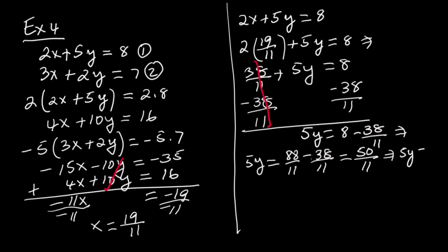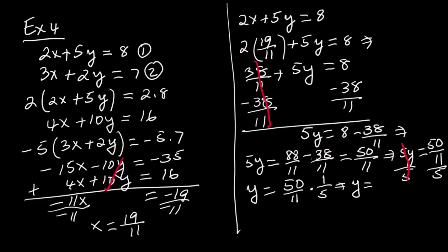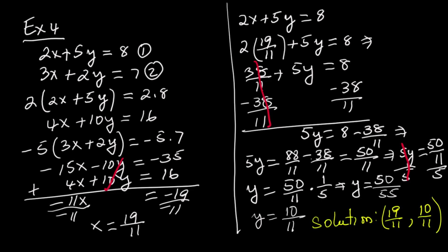Divide both sides by 5. To divide a fraction by a whole number, multiply by the reciprocal of the whole number: y equals 50 over 11 multiplied by 1 over 5. 5 times 11 is 55, so y equals 50 over 55. Divide top and bottom by 5: y equals 10 over 11. The solution of the system is 19 over 11 comma 10 over 11. If this helped, please consider subscribing to our channel for more step-by-step math lessons just like this one. Thanks for watching.